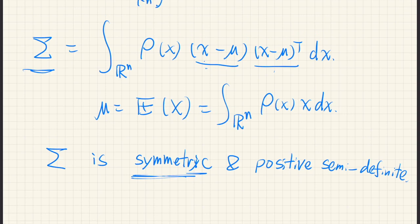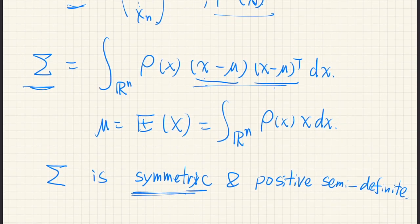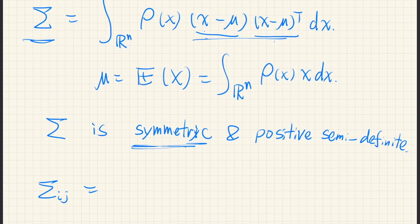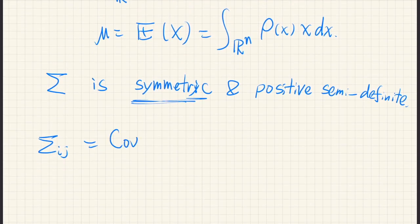Symmetric is easy to see because of this form. So basically, the ij element of this matrix is covariance between xi and xj. So since covariance is symmetric, if we swap xi and xj, it is still the same covariance.